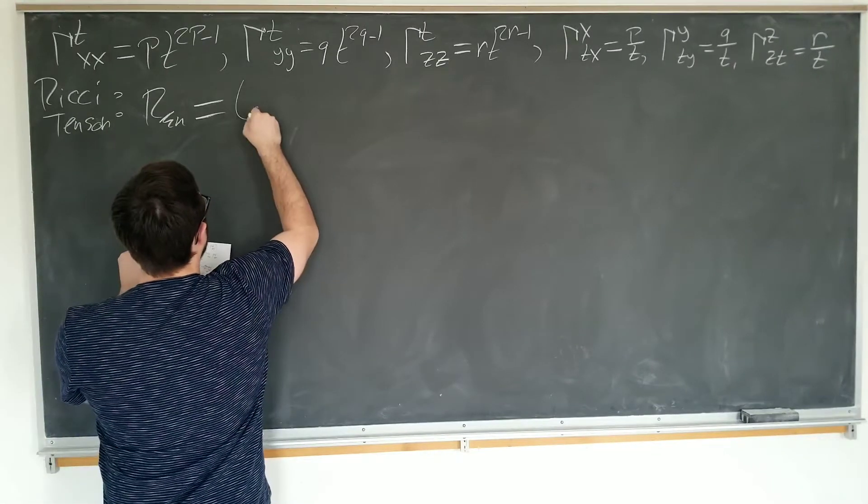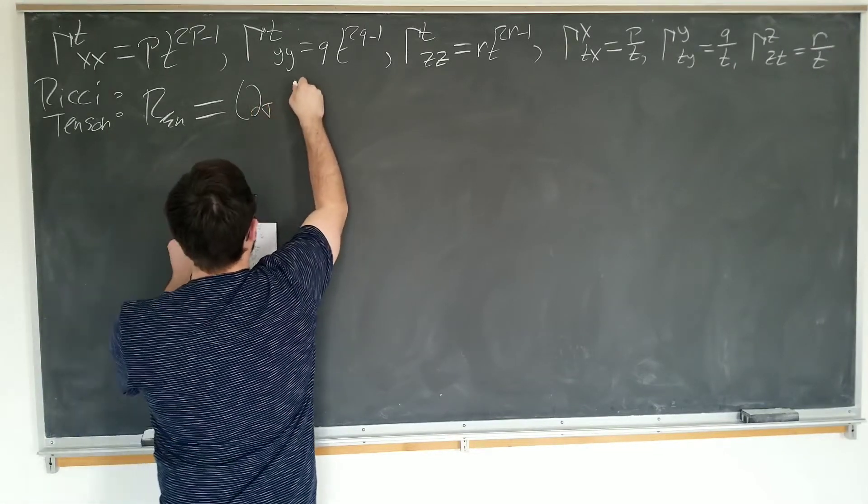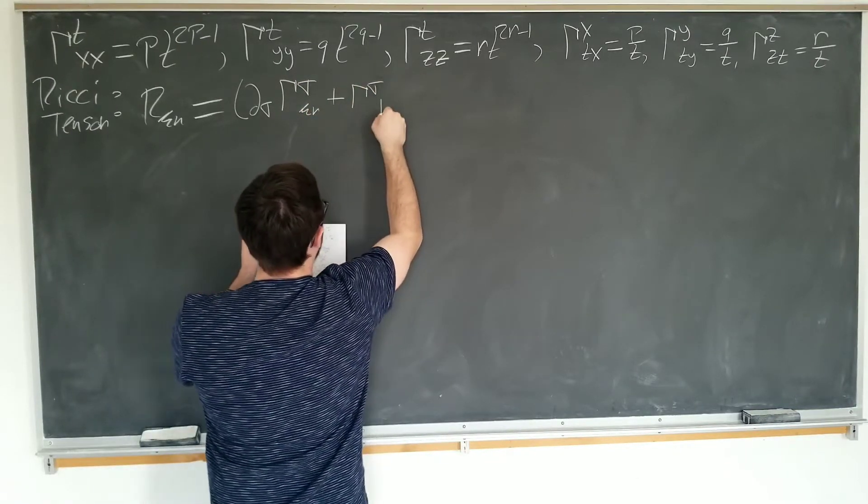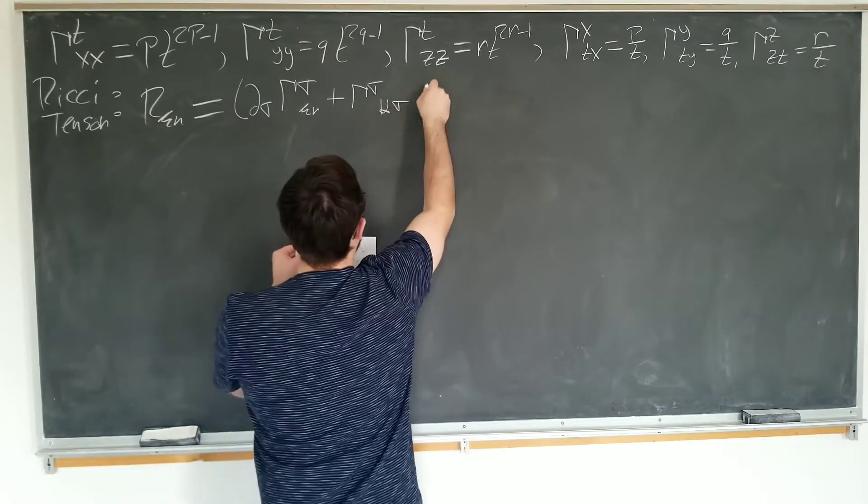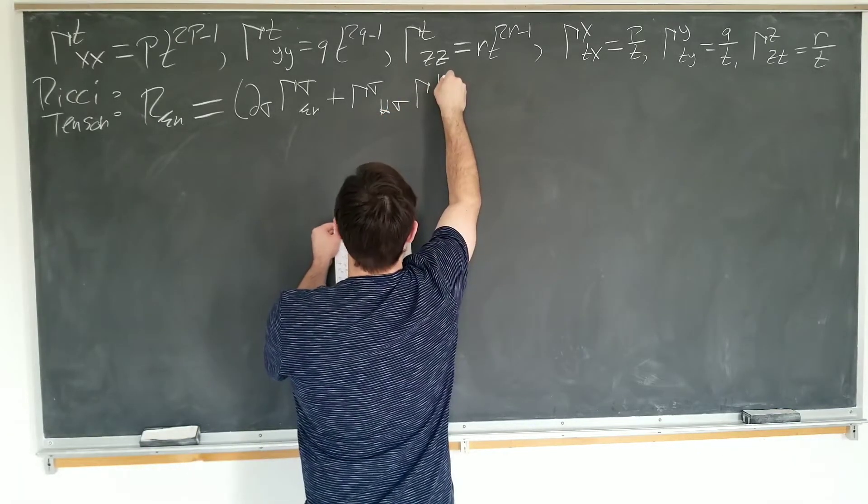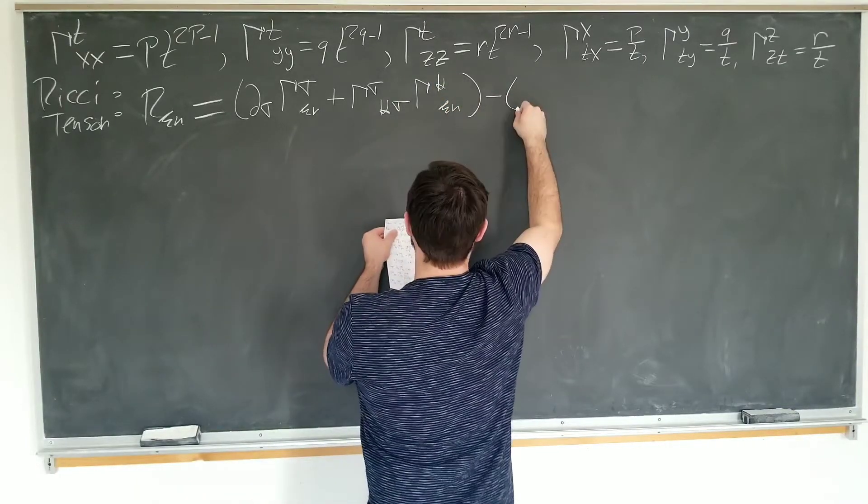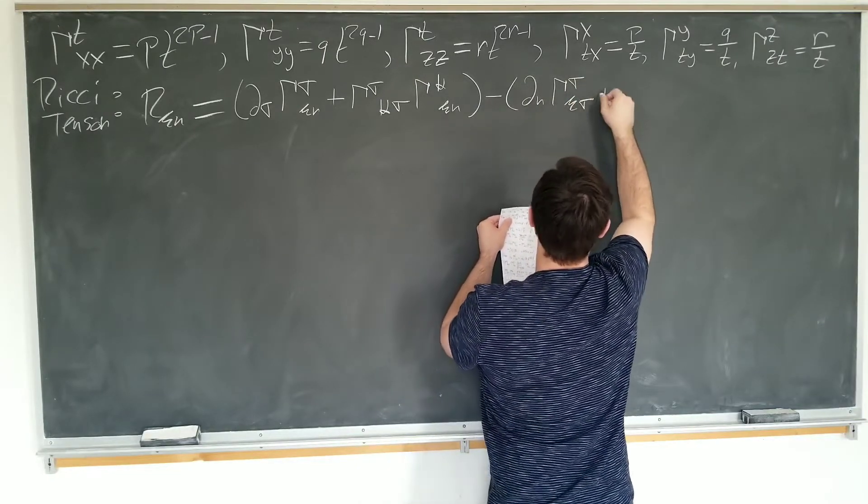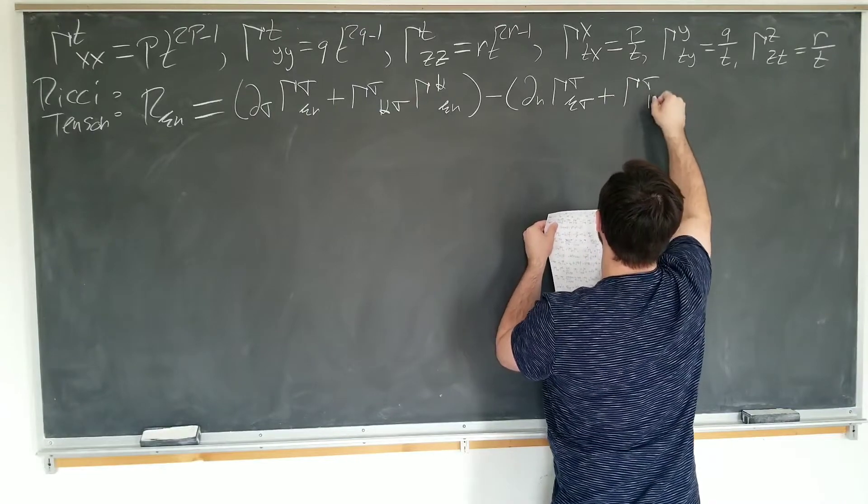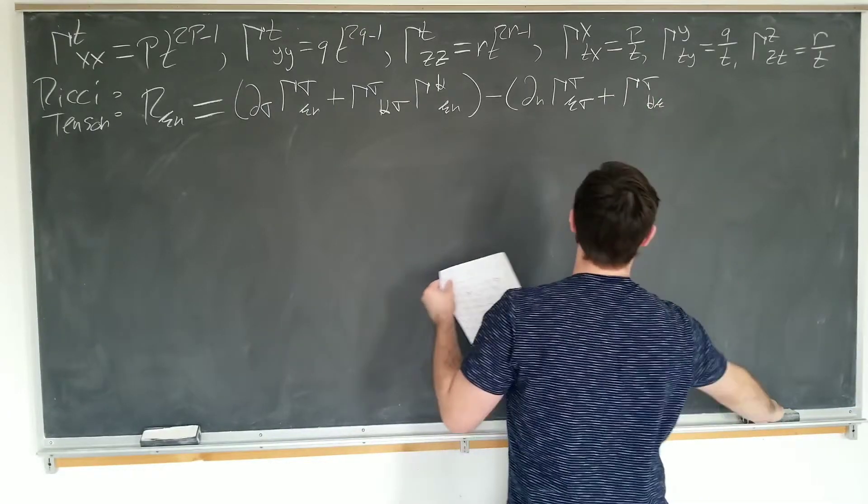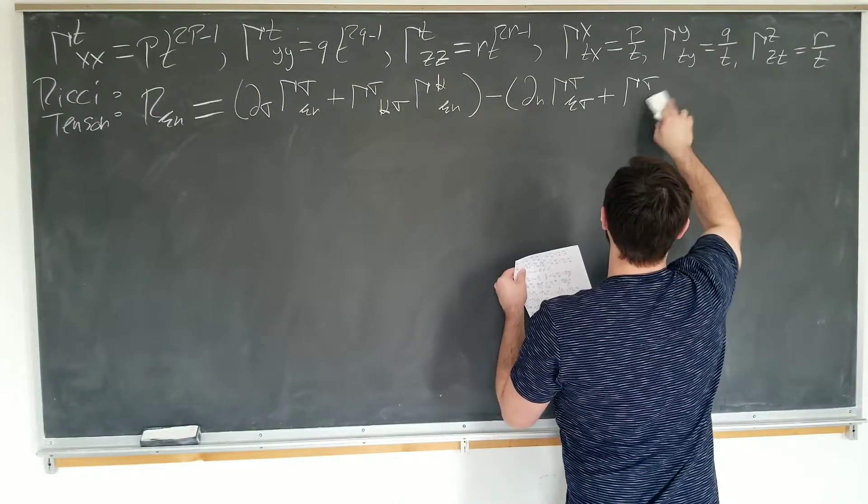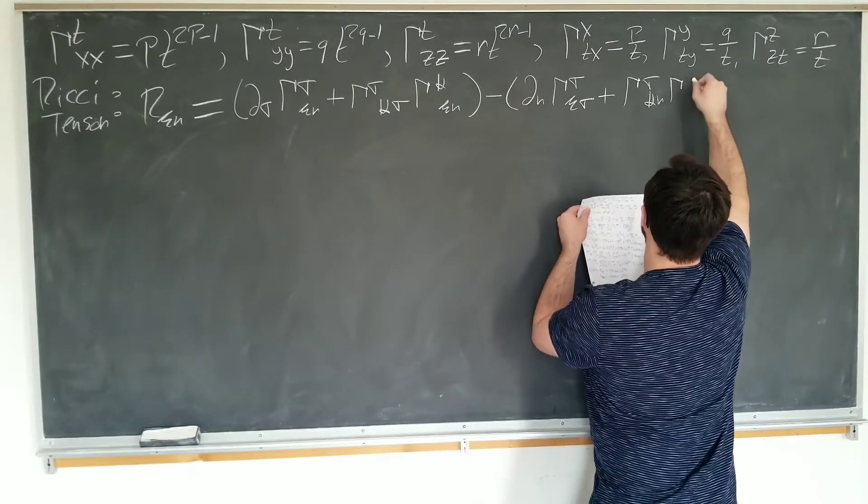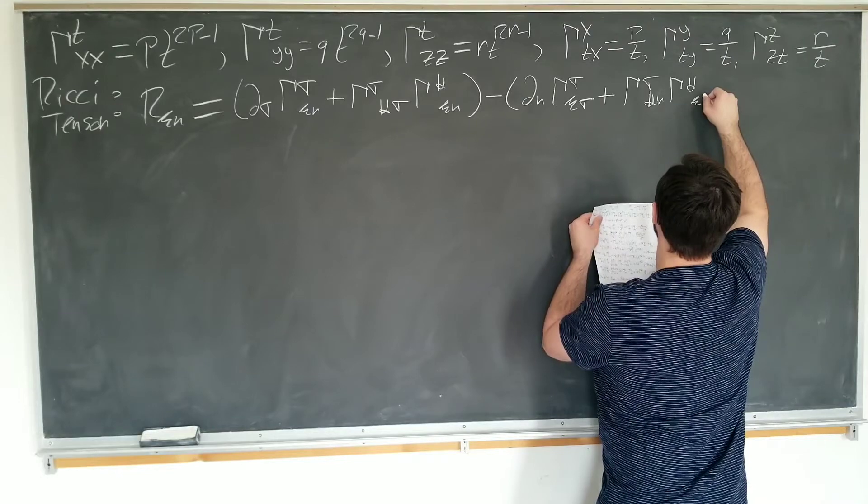Its definition is as follows: derivative with respect to sigma of gamma^sigma_mu_nu plus gamma^sigma_kappa, a new summation index kappa, sigma, gamma^kappa_mu_nu minus D_nu gamma^sigma_mu_sigma plus gamma^sigma_kappa_mu. No, this is nu. Every one of these has to be right. Gamma^kappa_nu, gamma^kappa_mu_sigma.